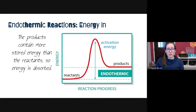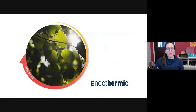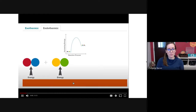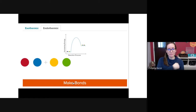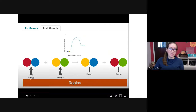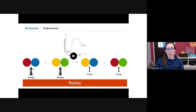In an endothermic reaction, the energy level of the reactants is lower than that of the products. You still have activation energy required, but the products store and absorb the energy. An example is photosynthesis — energy is transformed from radiation from the sun into energy stored in glucose sugar. A lot of energy was required to break the initial bonds, but not as much energy was released when bonds reformed in the product — that's why it's classified as endothermic.